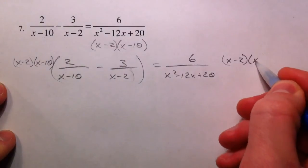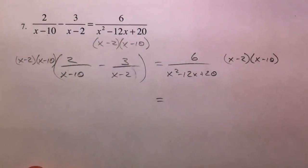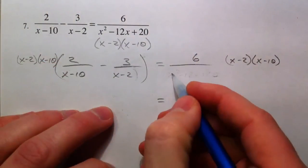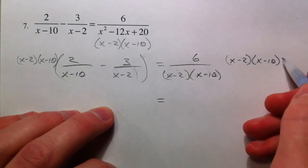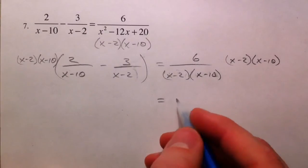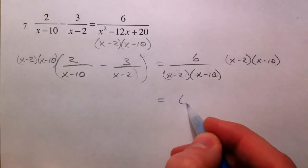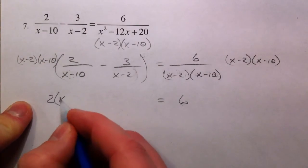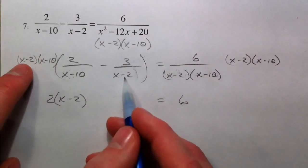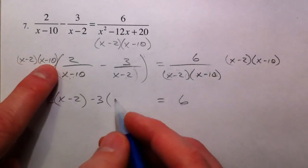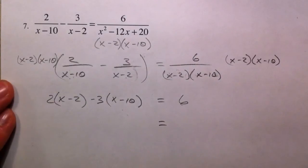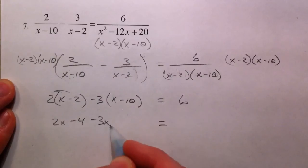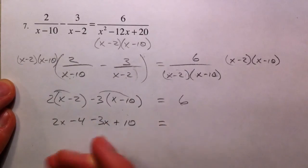The right-hand side also gets multiplied by x minus 2 times x minus 10. The whole reason we multiply through by the common denominator is to get rid of the fractions — let's write it in factored form so it's easier to see what cancels. The x minus 2 times x minus 10 cancels completely with that denominator, leaving just 6. Then the x minus 10 crosses out with the first fraction, leaving 2 times x minus 2. The x minus 2 crosses out with the next, leaving negative 3 times x minus 10.